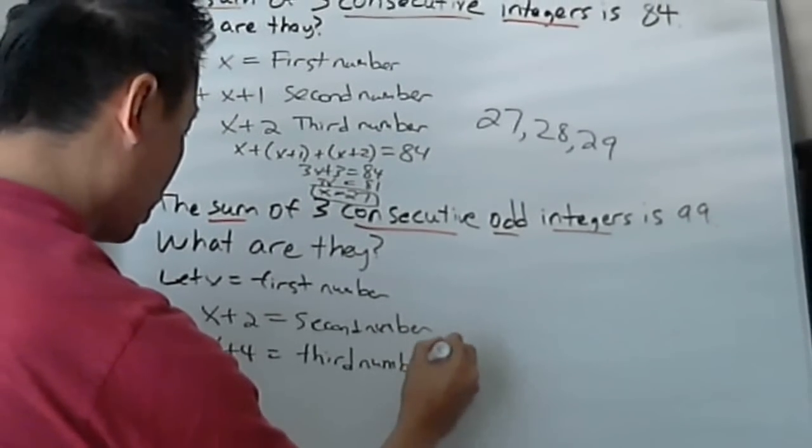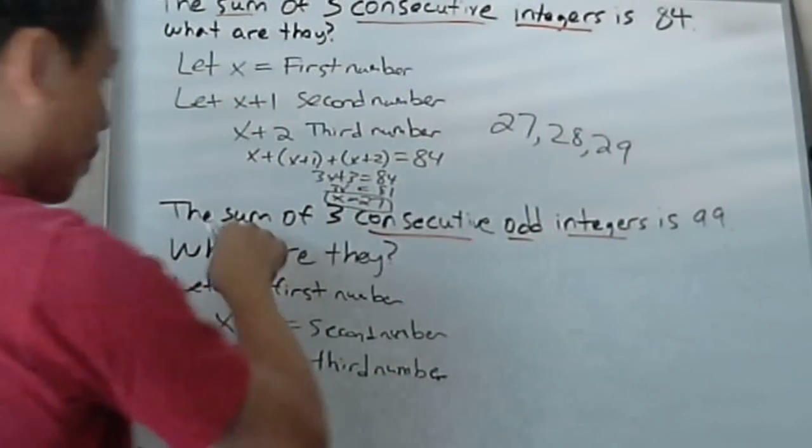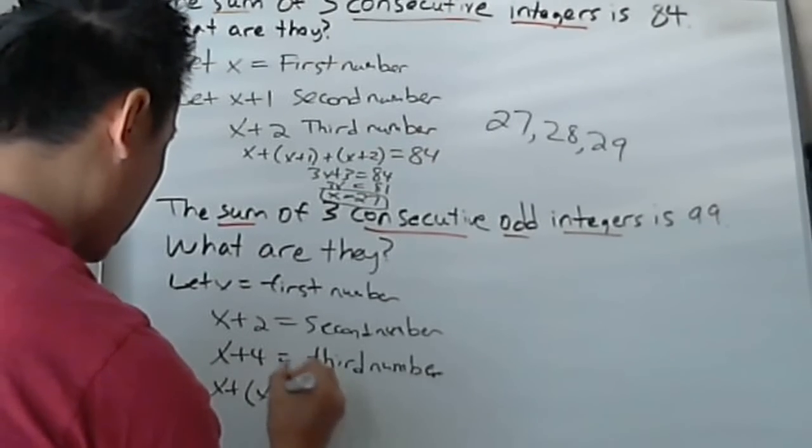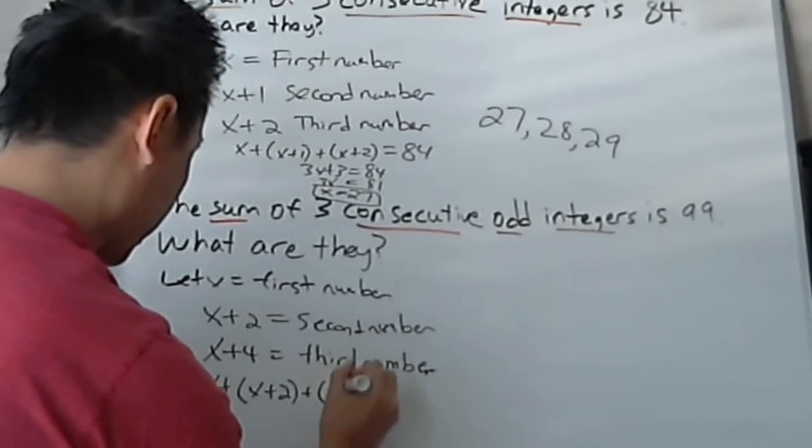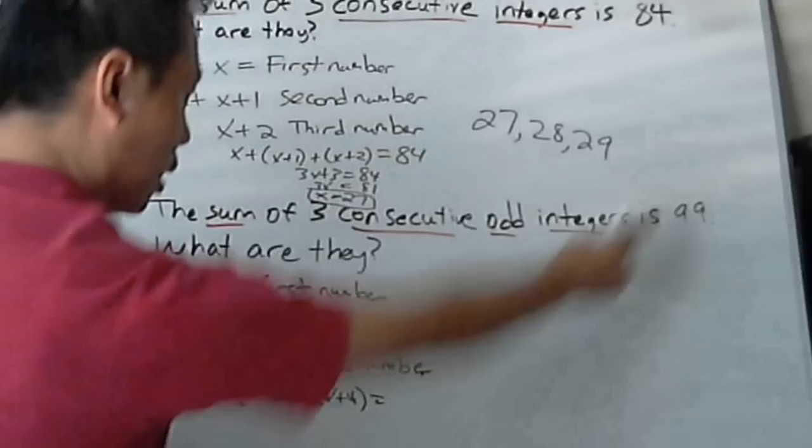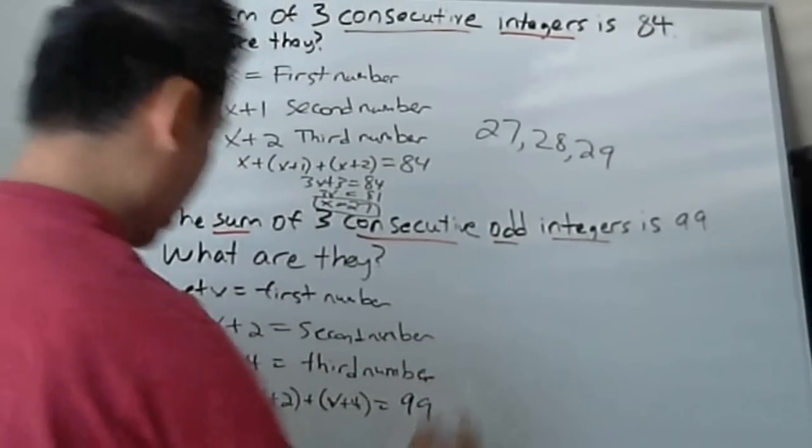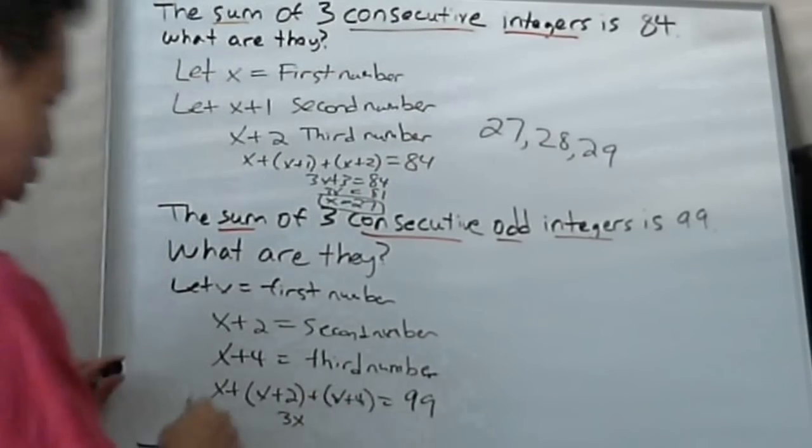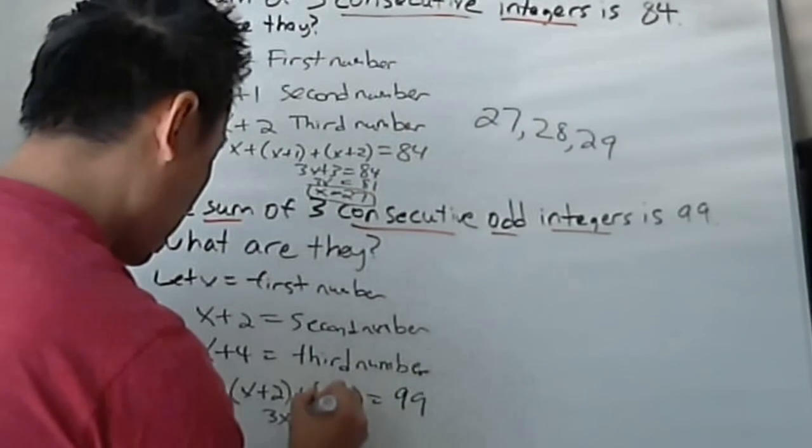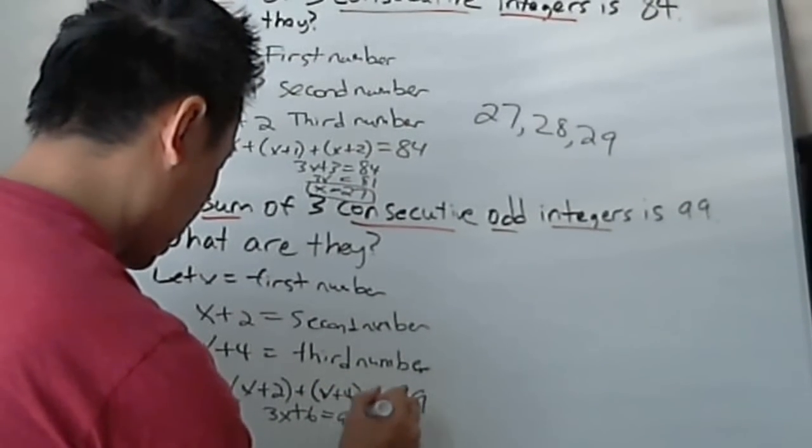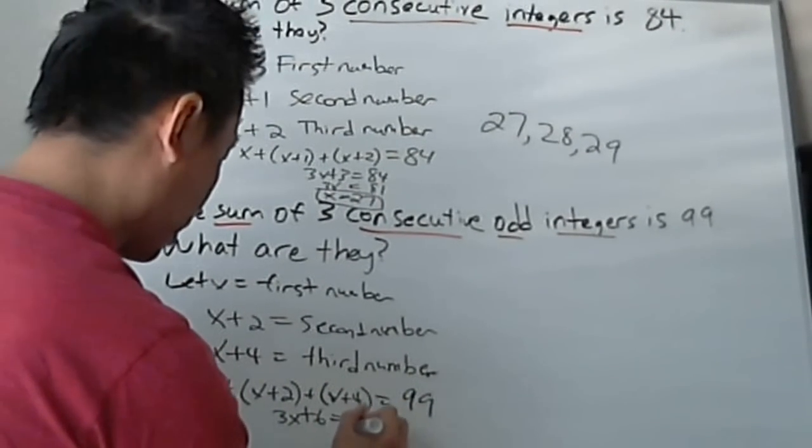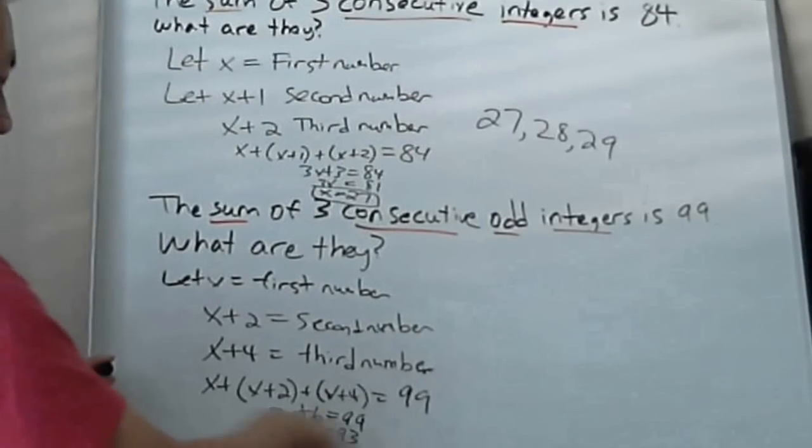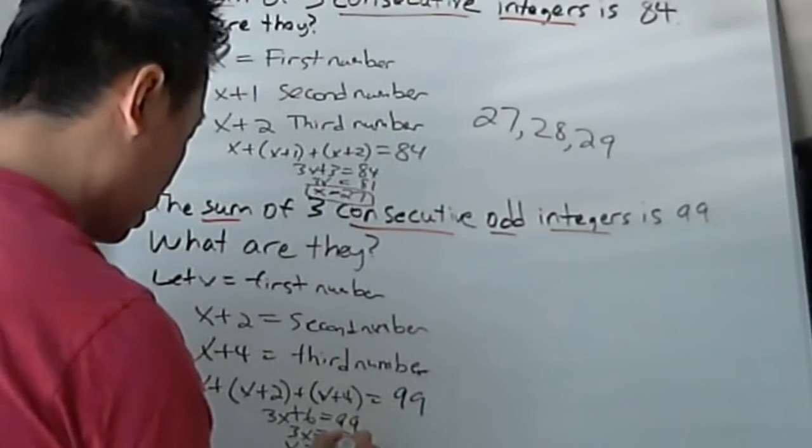So now, what do I have to do? Sum of 3 consecutive integers. Sum, so I'm adding again. x plus x plus 2 plus x plus 4 equals 99. The sum is 99. And then I again solve. I combine the x's. There's three x's: x plus x plus x is 3x plus 6 equals 99. And then subtract 6 on both sides, so I get 93 equals 3x. And if you divide by 3 on both sides, you get 31.